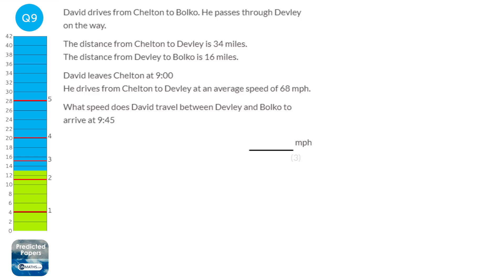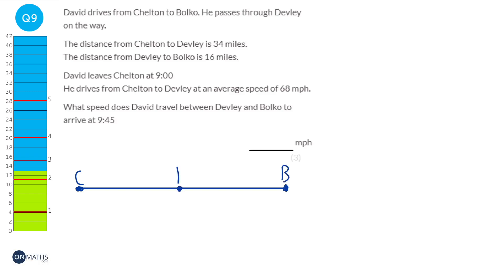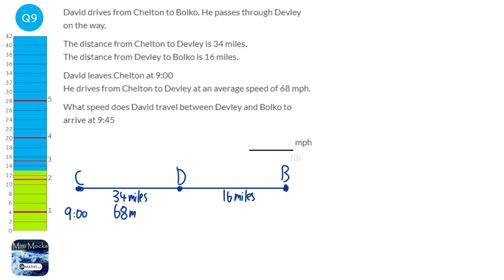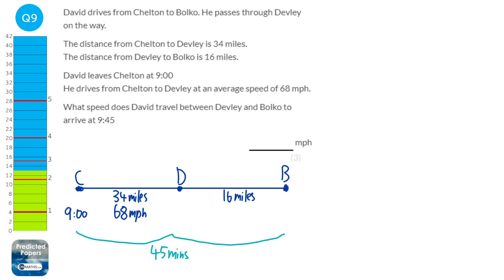There's a lot going on here, so draw a diagram. Start at Chelton (C), go through Devly (D) to Bolco (B). The distance from Chelton to Devly is 34 miles; Devly to Bolco is 16 miles. David leaves at 9 o'clock and needs to arrive at 9:45, so the whole journey must take 45 minutes, or 0.75 hours. The total distance is 34 + 16 = 50 miles.